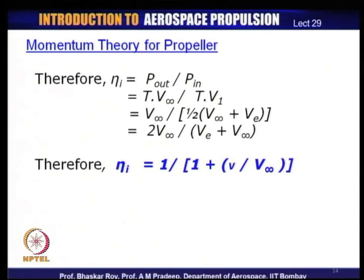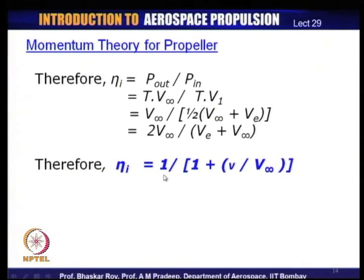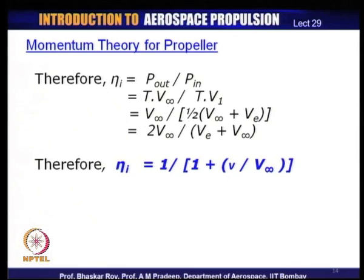The efficiency can now be written in terms of power output and power input, expressed in terms of the velocity fields we have been defining — in terms of V∞ and V_e. The final efficiency parameter comes out to be 1 / (1 + v/V∞), where small v is the induced velocity. The efficiency with the subscript 'i' is because the efficiency computed through momentum theory or actuator disc theory is often called induced efficiency.